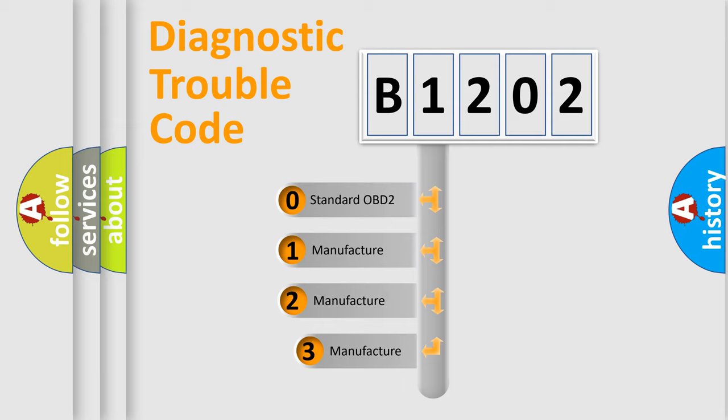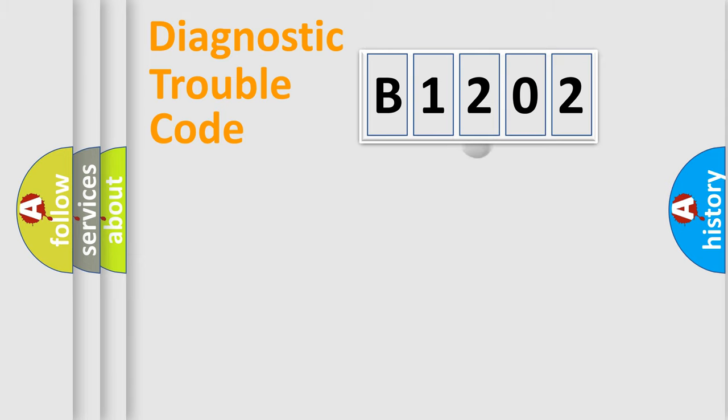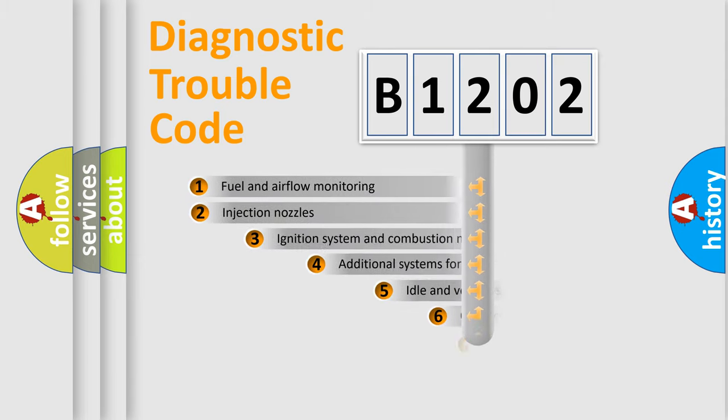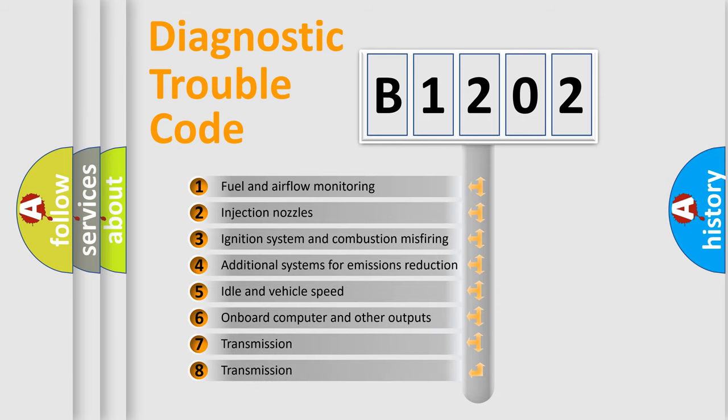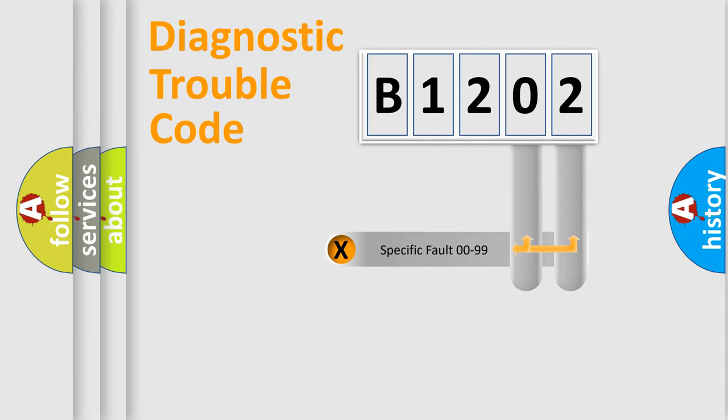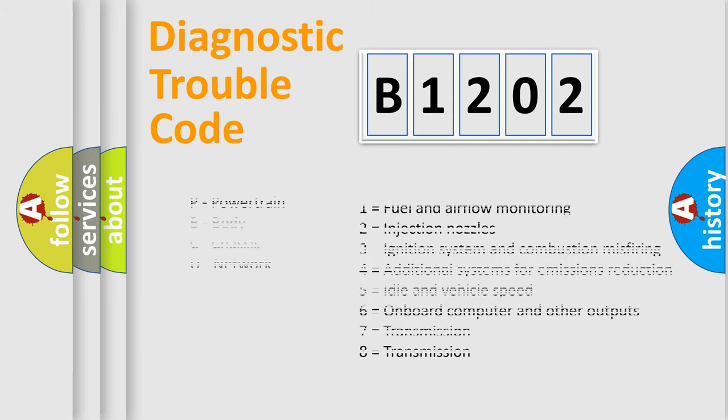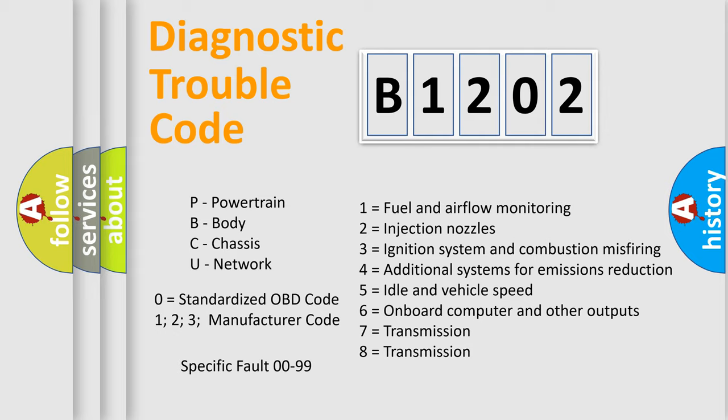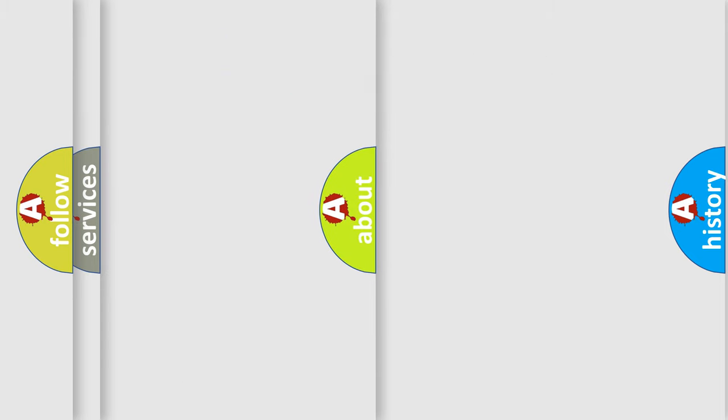If the second character is expressed as zero, it is a standardized error. In the case of numbers 1, 2, or 3, it is a more specific expression of the car-specific error. The third character specifies a subset of errors. The distribution shown is valid only for the standardized DTC code. Only the last two characters define the specific fault of the group. Let's not forget that such a division is valid only if the second character code is expressed by the number zero.